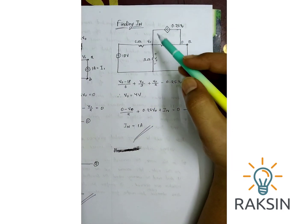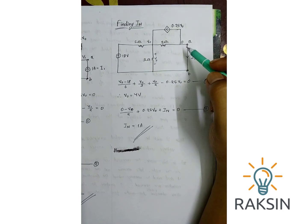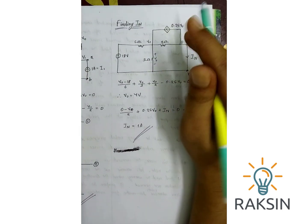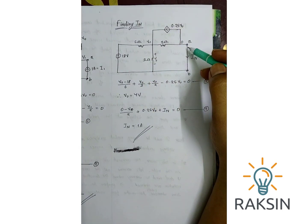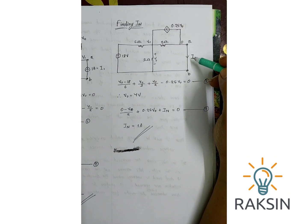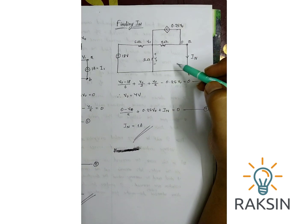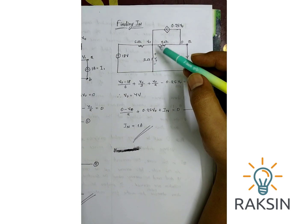Now we have to find IN. This is basically the given circuit. We just have to short this AB terminal. We will label it as IN current. We have to find it. Just like before, I have applied nodal analysis here.